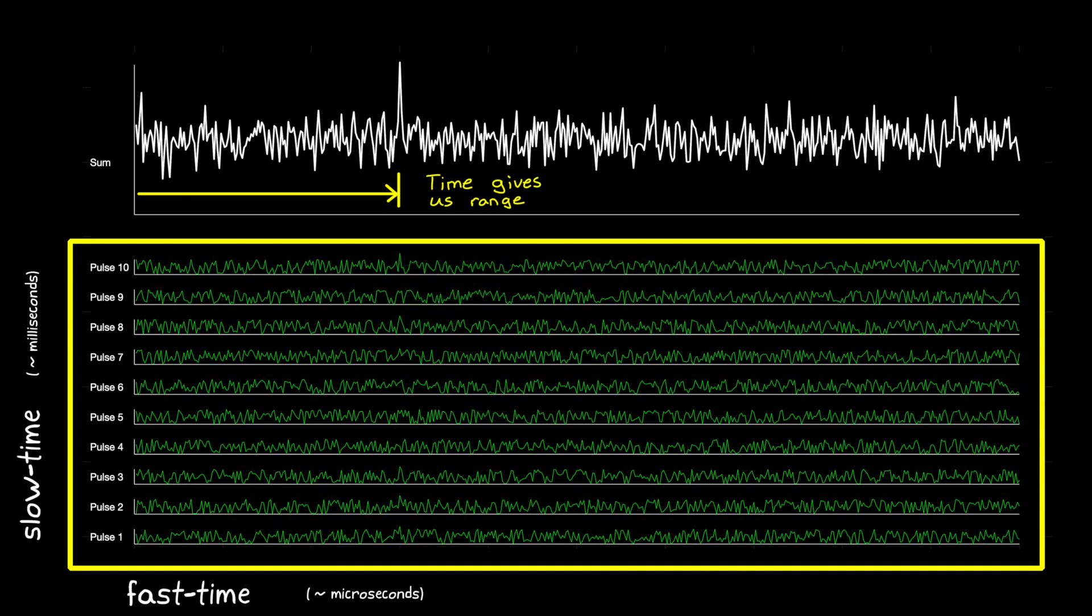Let's move on from range and now talk about how we can use this data that we've collected to measure radial velocity. And for this, we're going to compare the data from pulse to pulse across the so-called slow time axis.